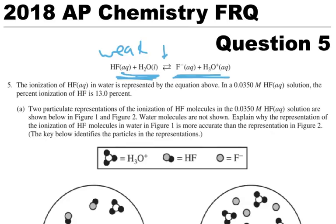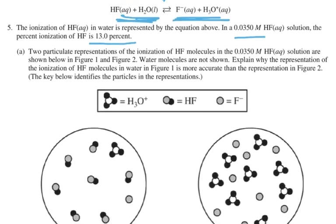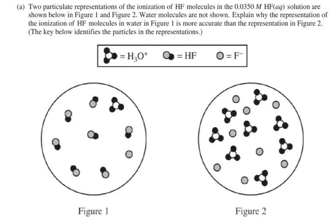The ionization of HF in water is represented by the equation above. In a 0.0350 molar HF solution, the percent ionization of HF is 13%. If it were a strong acid it would be 100%, but it's only 13%. Two particulate representations of the ionization of HF molecules in this 0.035 molar HF solution are shown below — figure one and figure two. Water molecules are not shown. Explain why figure one is more accurate than figure two.